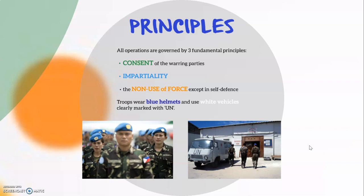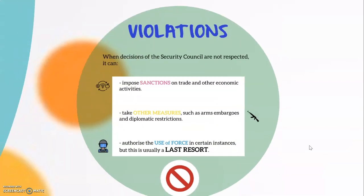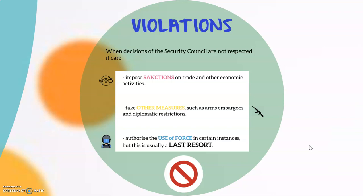Another question might be: what happens when a country ignores the decisions of the Security Council? When decisions of the Security Council are not respected, the Council may take several actions to ensure their implementation. It can impose sanctions on trade and other economic activities. It can take other measures, such as arms embargoes — an embargo is when a government refuses to trade arms with a country, usually because of a political problem inside that country — and diplomatic restrictions.